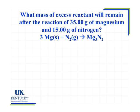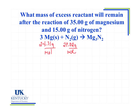Looking at the periodic table, the molar mass of magnesium is 24.31 grams per mole. For nitrogen, each nitrogen is 14.01, so N₂ is 28.02 grams per mole. I can also find the molar mass of magnesium nitride, which is 100.93 grams per mole. Now I have all those numbers readily available.